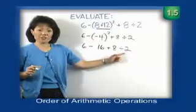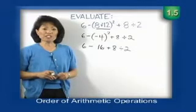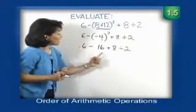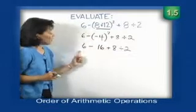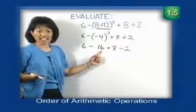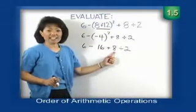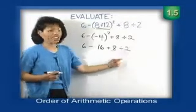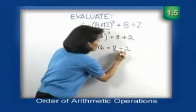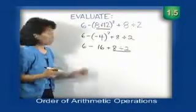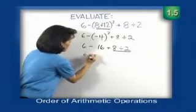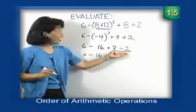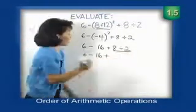Now we go to our next step: simplify multiplication or division, working from left to right. Starting on the left, I have 6 minus 16 — that's subtraction — plus 8 — that's addition. But at the end I have 8 divided by 2, so that's the next operation I'll perform. I rewrite the first part: 6 minus 16 plus, and then perform 8 divided by 2, which is 4.